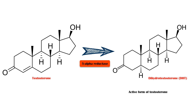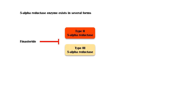DHT is the active form of testosterone, and it is associated with benign prostatic hyperplasia and androgenic hair loss in men. 5-alpha reductase enzyme exists in several forms. Finasteride inhibits both type 2 and type 3 5-alpha reductase, resulting in reduced conversion of testosterone into dehydrotestosterone, reducing the size of the prostate and hair loss, as well as hirsutism in women.